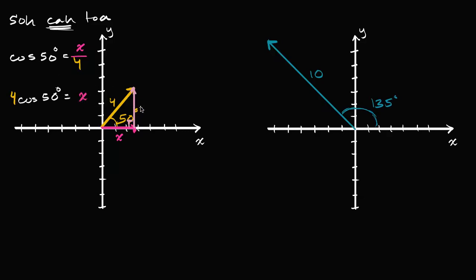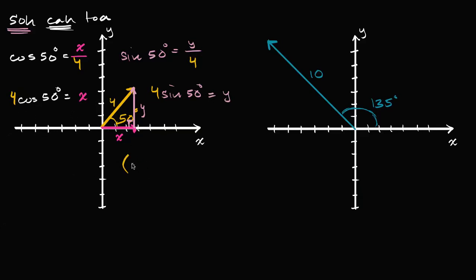Now what about the y component? That side is opposite to the 50-degree angle. Sine deals with opposite over hypotenuse. So the sine of 50 degrees equals y over four. Multiplying both sides by four, we get four times sine of 50 degrees equals y. So this vector in component form has x component equal to four cosine of 50 degrees, and y component equal to four sine of 50 degrees.